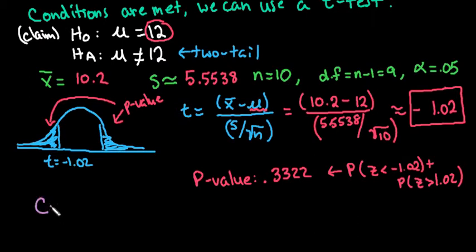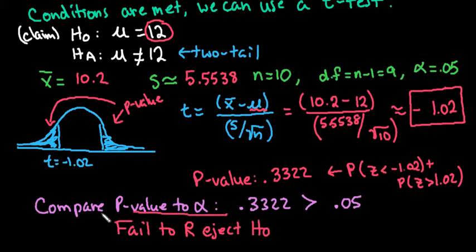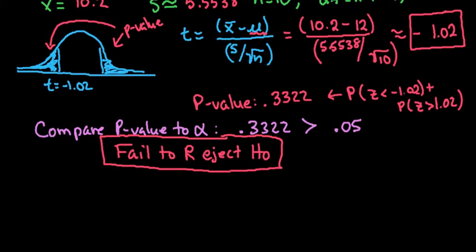Now we have to make our decision. Remember that our decision rule using the p-value is we're going to compare the p-value to alpha. We would look at 0.3322 compared to 0.05, and we can see that this is definitely greater than. Anytime the p-value is greater than, we fail to reject h sub zero or the null hypothesis.